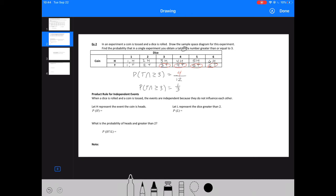This is going to lead us into the product rule for independent events, which is another item to consider when you are solving equations. When a dice is rolled and a coin is tossed, the events are considered to be independent because they don't include each other, which is an important criteria when you're thinking about events.